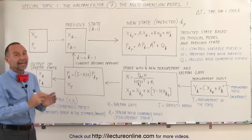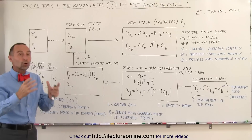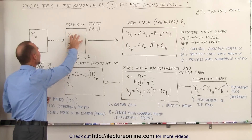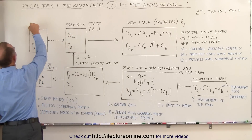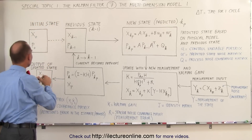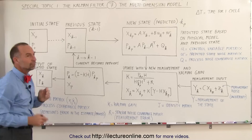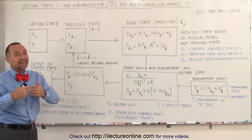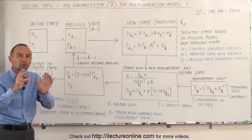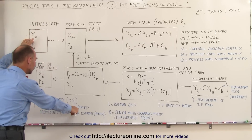First we're going to go through the process, and then in the next videos we'll carefully define what these are and show you examples of each. What happens is you have an initial state. The initial state contains what we call a state matrix and a process covariance matrix, meaning that the Kalman filtering process has inherent errors in it, and you want to keep track of those errors, estimate them, and reduce them as you go through the process.